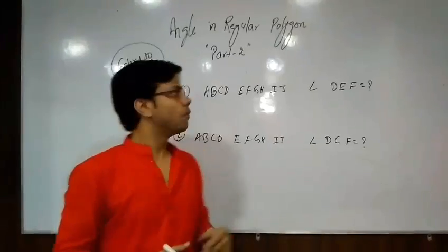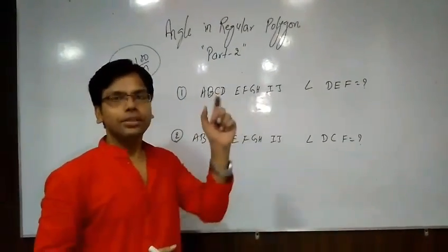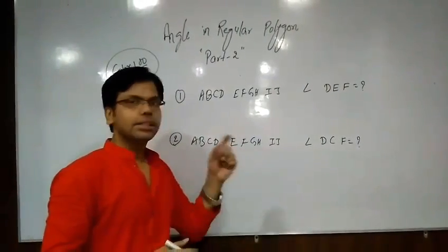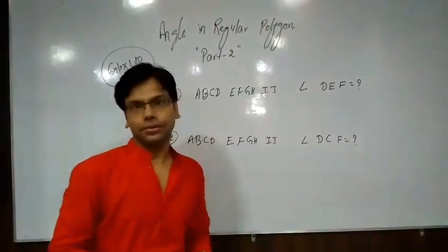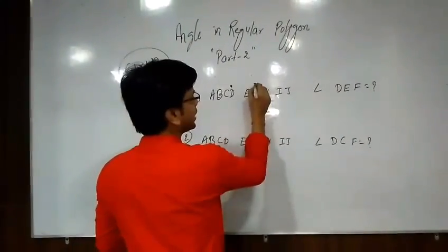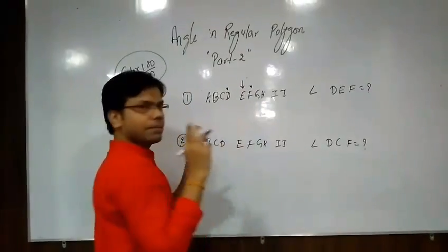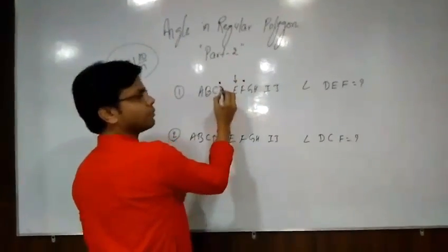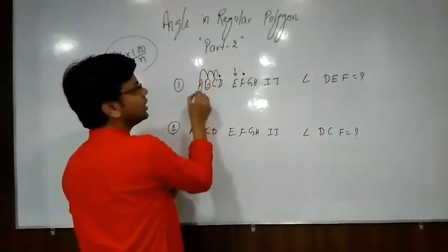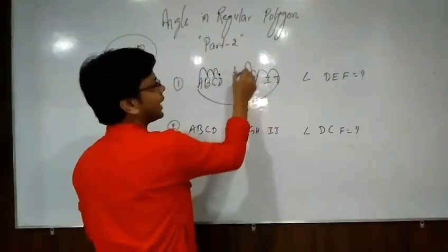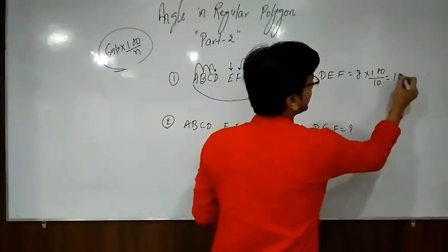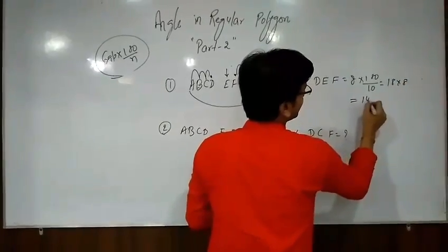Now we have two questions. One: A, B, C, D, E, F, G, H, I, J is a regular polygon. Find the angle DEF. D and F are the extreme points and E is the middle. So we count D to F anti-clockwise: 1, 2, 3, 4, 5, 6, 7, 8. The gap is 8 into 180 divided by 10. This gives 18 into 8 equals 144 degrees.